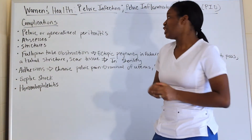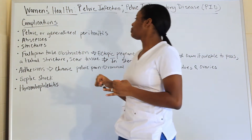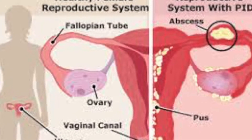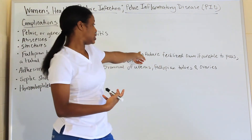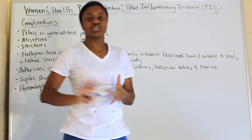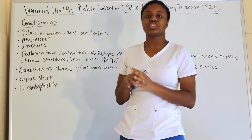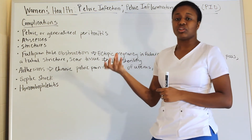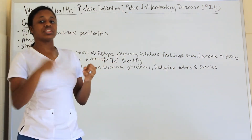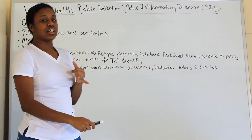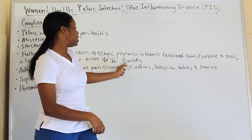Complications of PID include pelvic or generalized peritonitis, abscesses, strictures, and fallopian tube obstruction, which can lead to future ectopic pregnancies. Scar tissue can build up and block the fallopian tubes. Whether due to tubal stricture, scar tissue, or ectopic pregnancy, obstruction can ultimately lead to sterility — the inability to become pregnant at all.